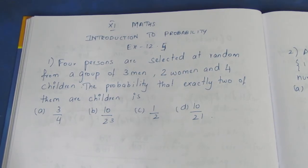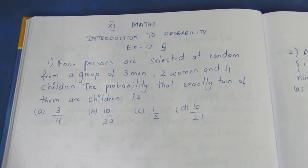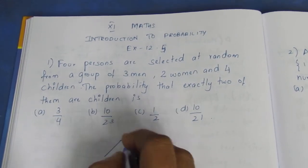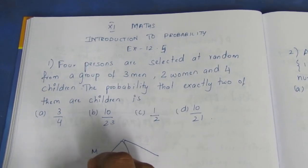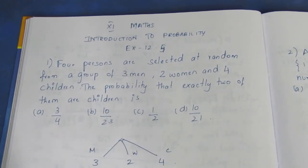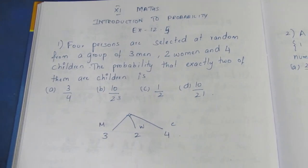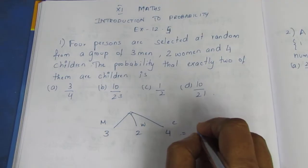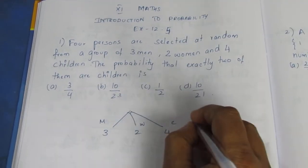So you can select four persons from three men, two women and four children. Men are 3, women are 2, children are 4. What is the total number? 5 plus 4 is 9. So the total number is 9, and we select 4 persons.